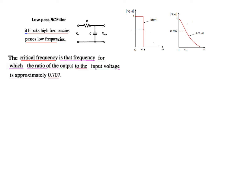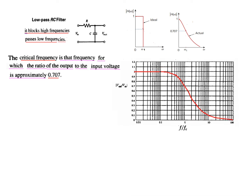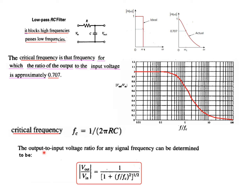The critical frequency is called Ωc or fc, and it is the frequency at which the ratio of output to input voltage is approximately 0.707. On the Bode plot, this is shown on a logarithmic scale of actual frequency divided by cutoff frequency. The formula for fc in an RC filter is fc = 1/(2πRC), and the formula for output-to-input voltage magnitude is: |Vout/Vin| = 1 / √(1 + (f/fc)²).